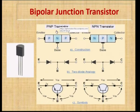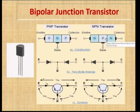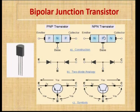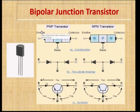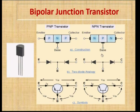There are two types: one is PNP Transistor and another is NPN Transistor. In the transistor there are three terminals: Emitter, Base, and Collector, which are the same in both PNP and NPN. In NPN, P is in the middle of two N-type materials, and in PNP, N is in the middle of two P-type materials. This is the construction of PNP and NPN Transistor.